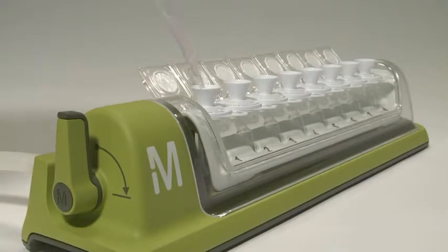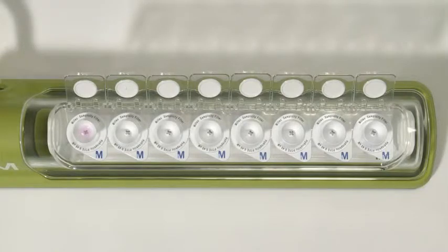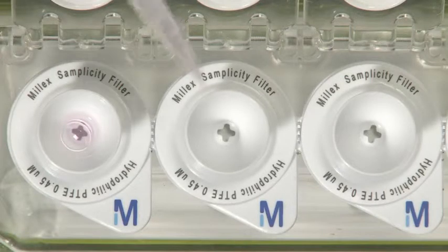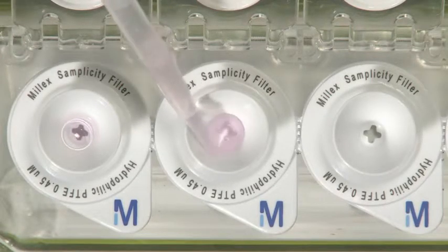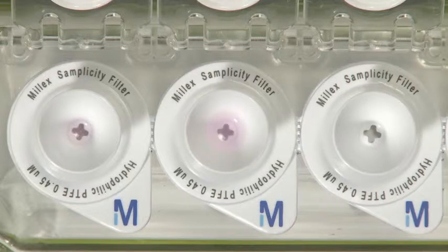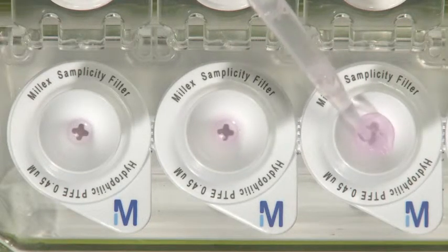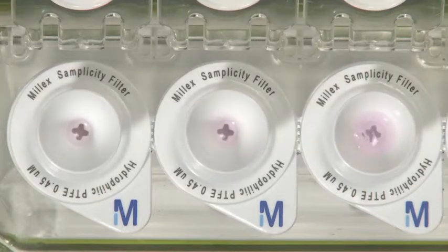Add samples to the conical filter funnels. You can add up to two milliliters of sample, which is the maximum capacity of the HPLC vial. Because the Simplicity system is vacuum-driven, you recover considerably more sample volume than you can with a syringe, and you can filter samples as small as 200 microliters.